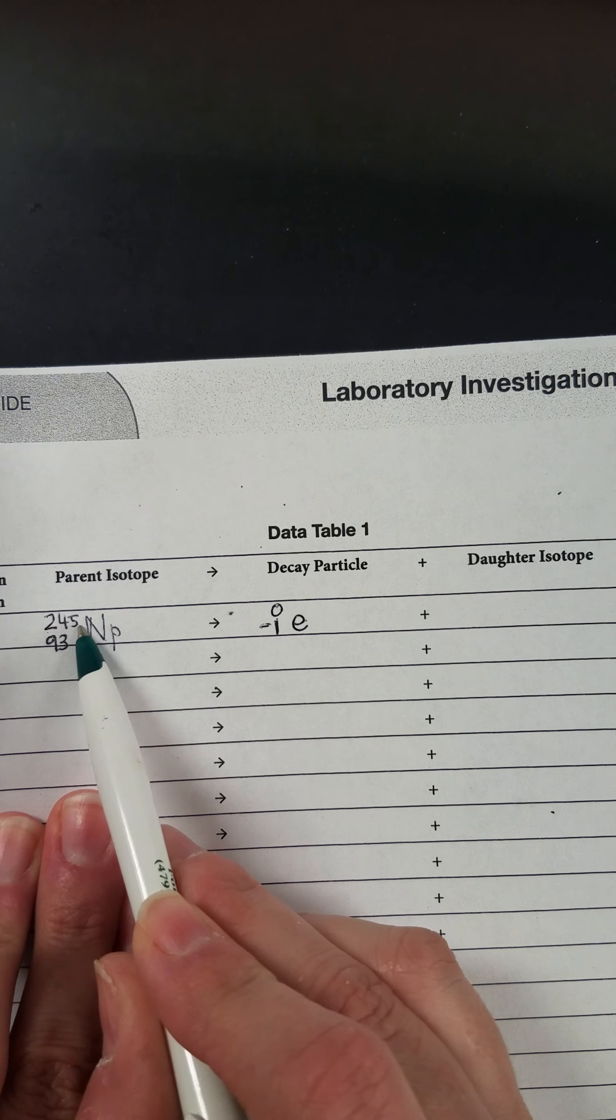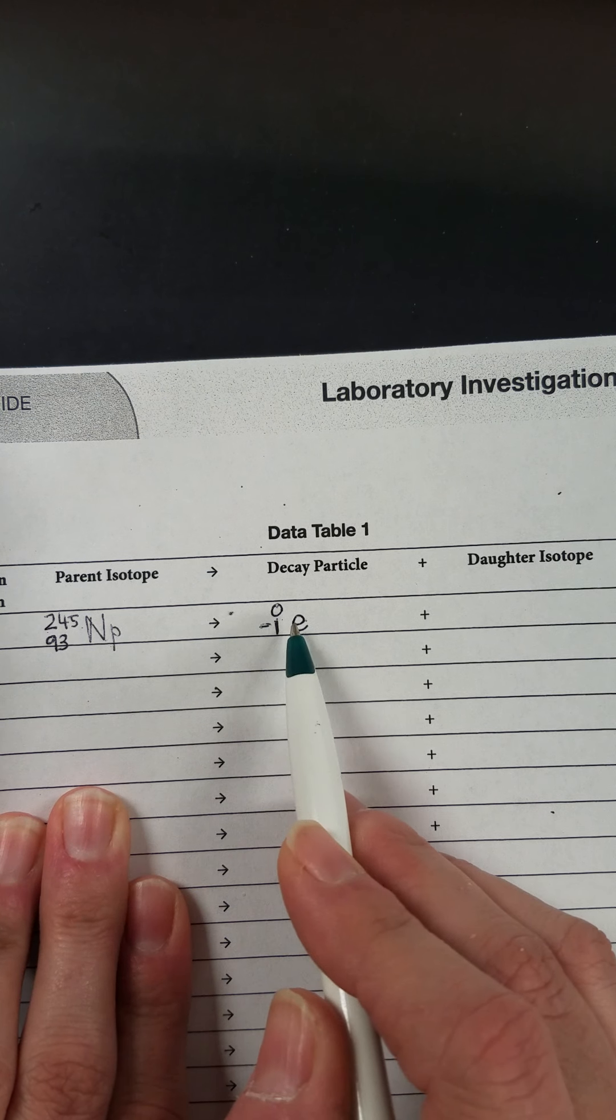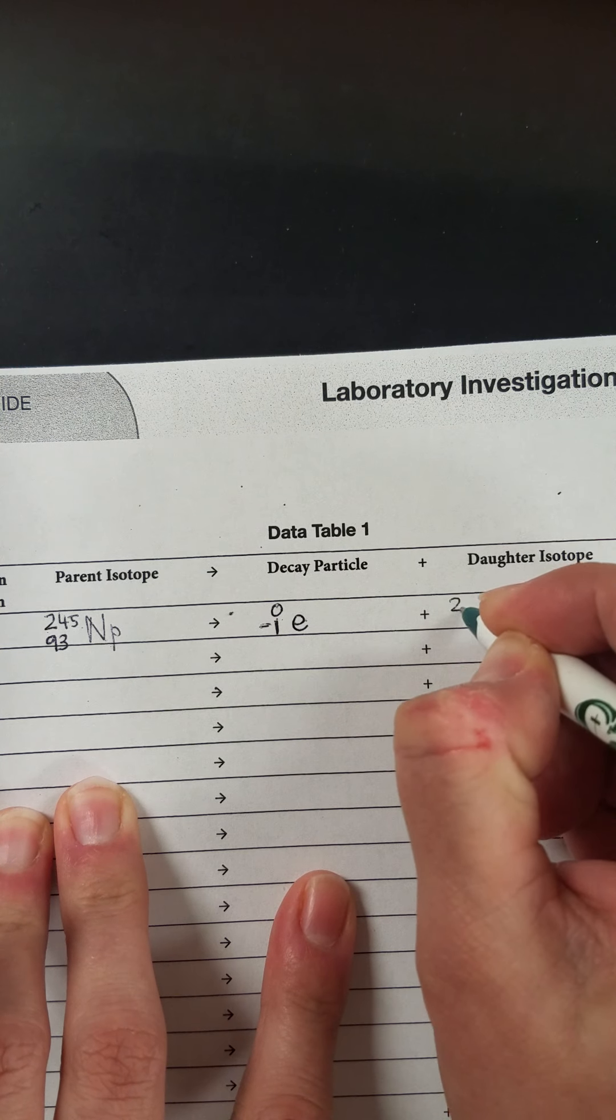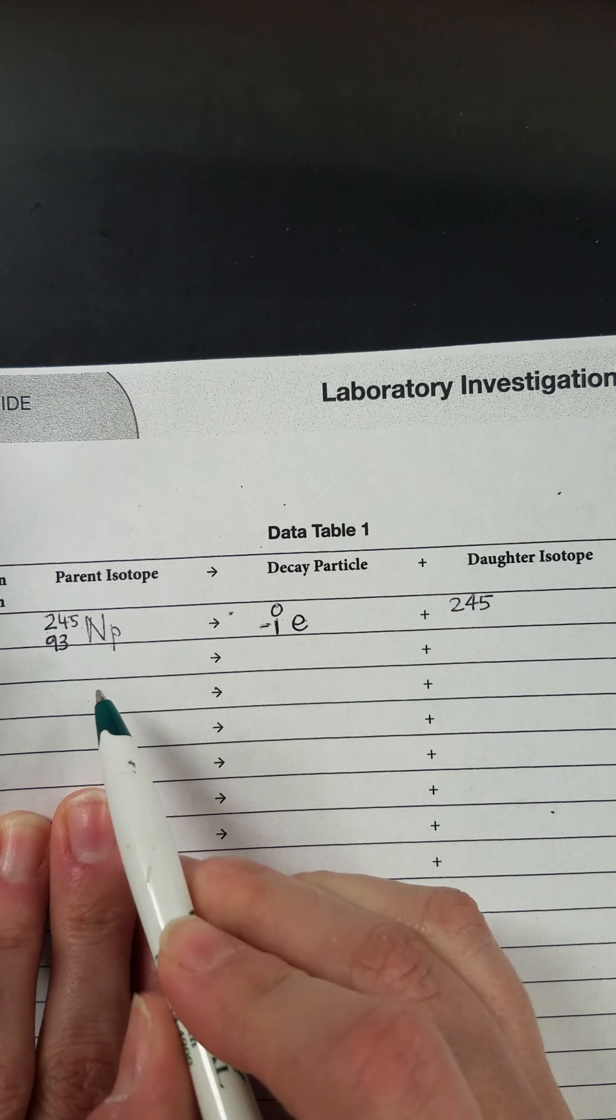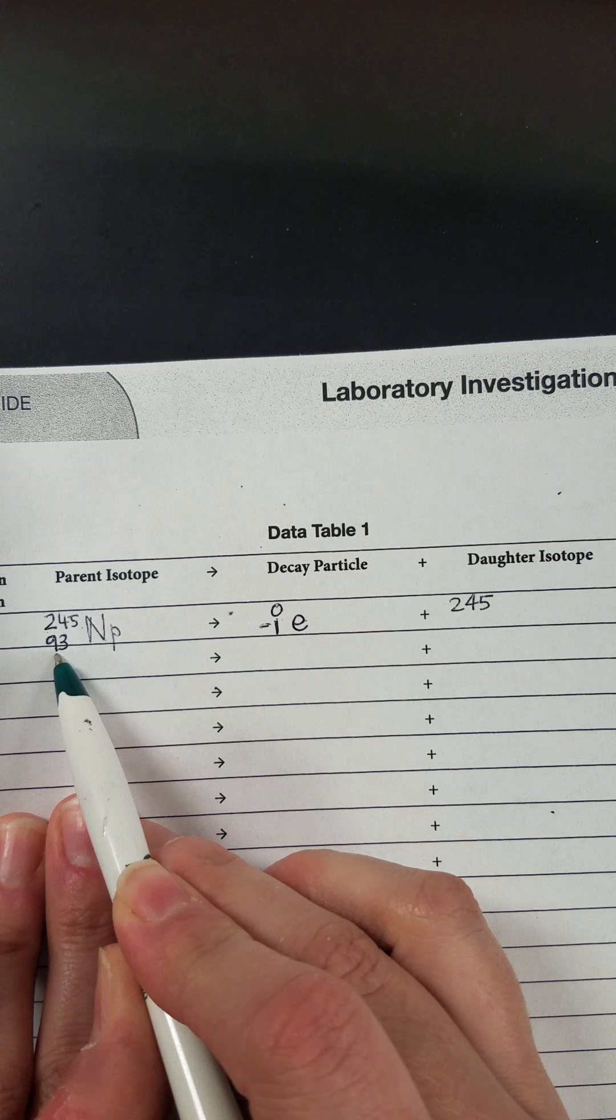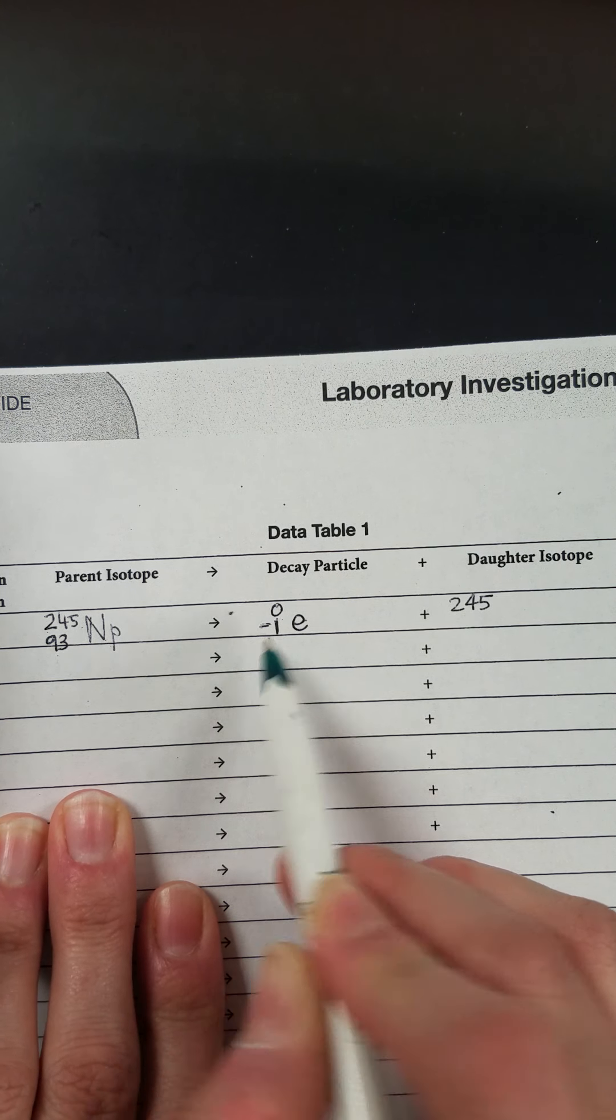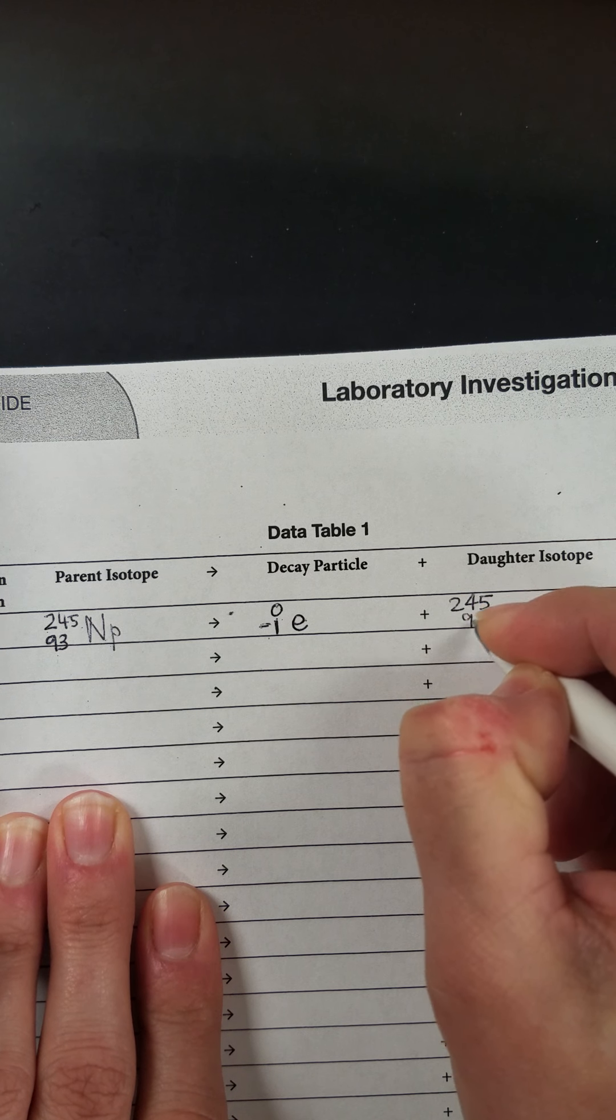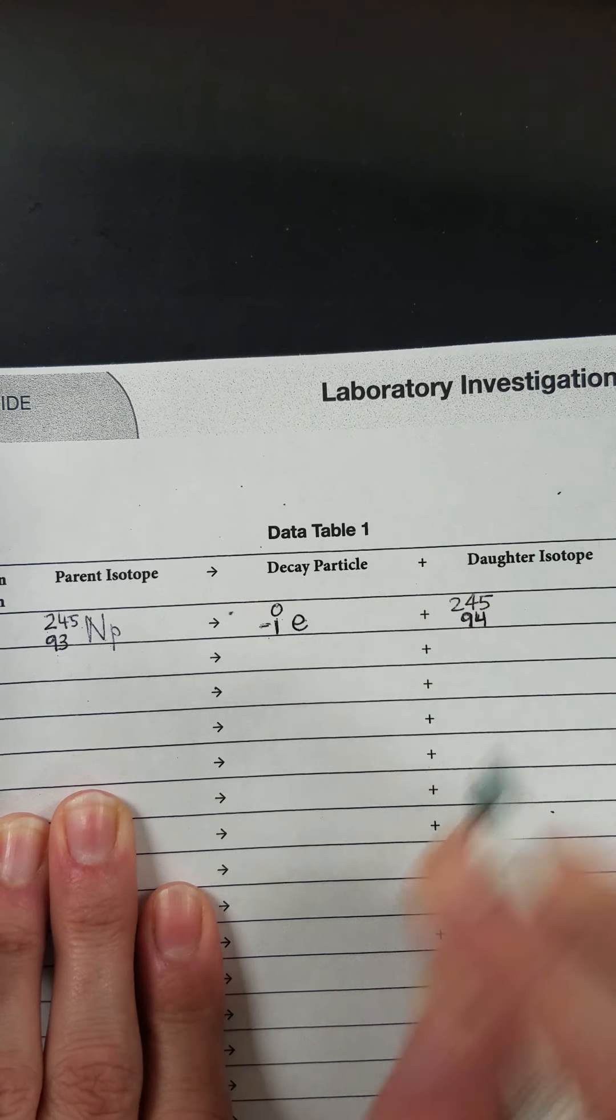At the top I have 245 on the left side and zero here, so I'm not adding or subtracting anything. So that is going to remain 245. My parent isotope is 93. I have a negative one on this side. So my atomic number then will be 94.